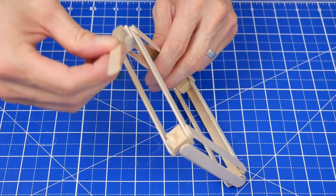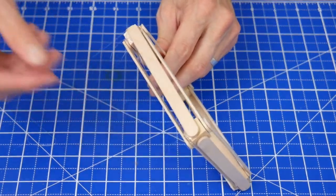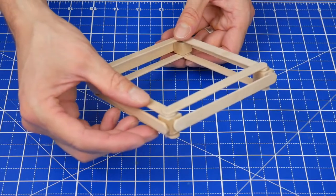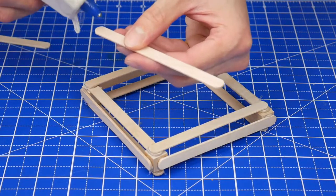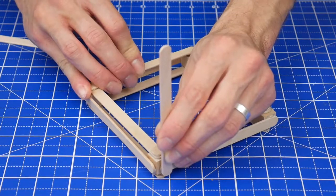Then glue four more craft sticks onto each side of this piece. Next choose one side to be the front of the slingshot and glue a stick upright onto each side.